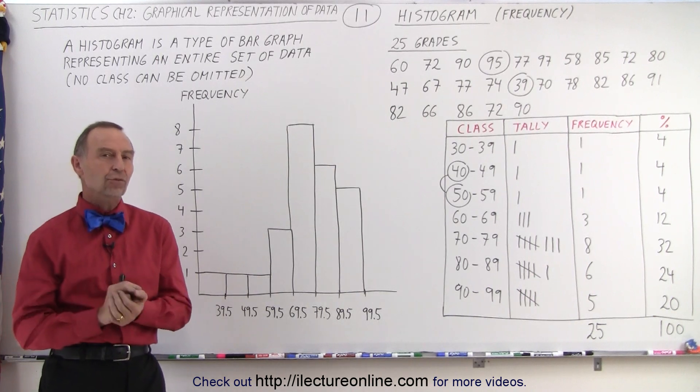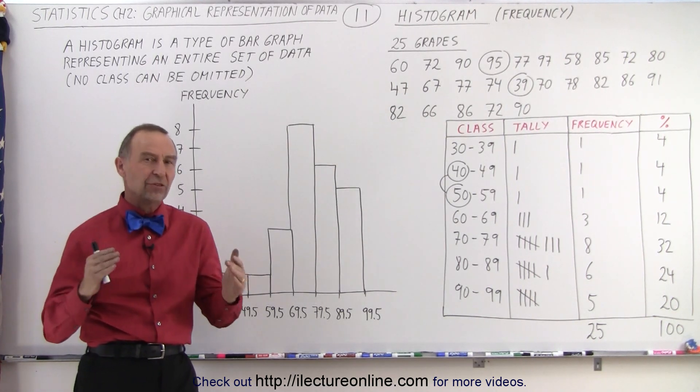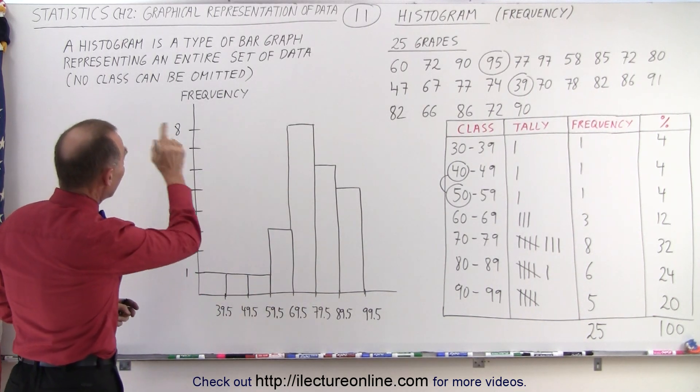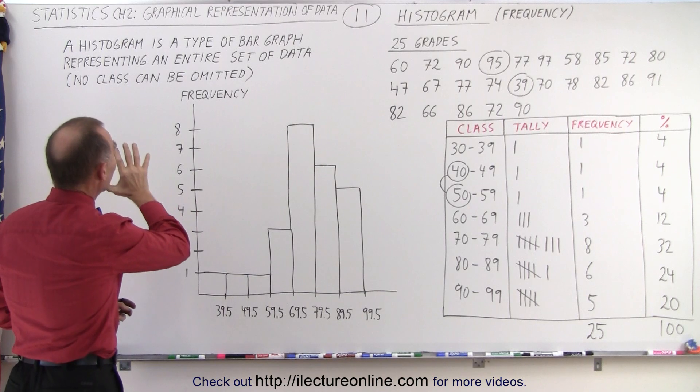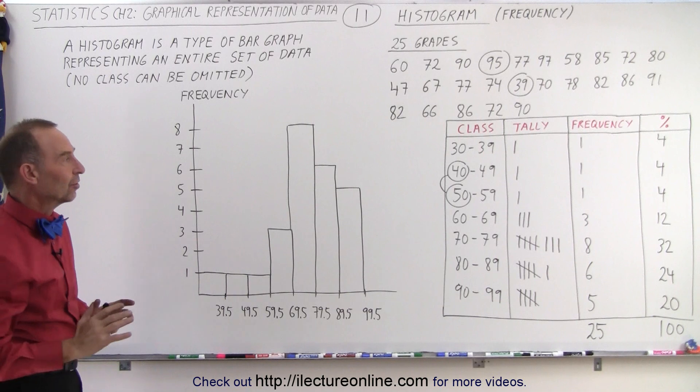Now what is a histogram? It's essentially a bar graph with a specific specification. A histogram is a type of bar graph that represents the entire set of data. In other words, you cannot omit any classes.